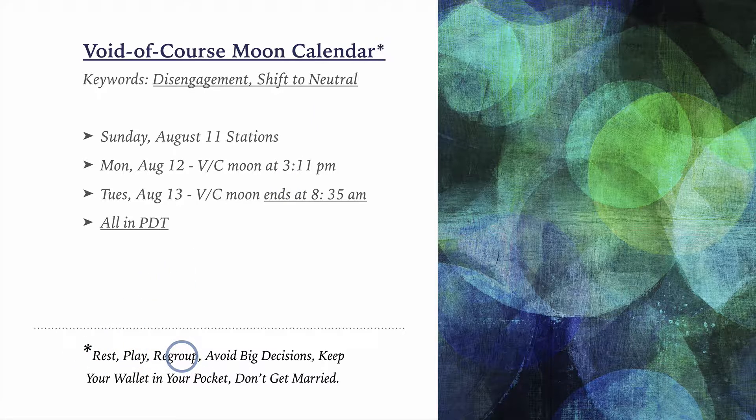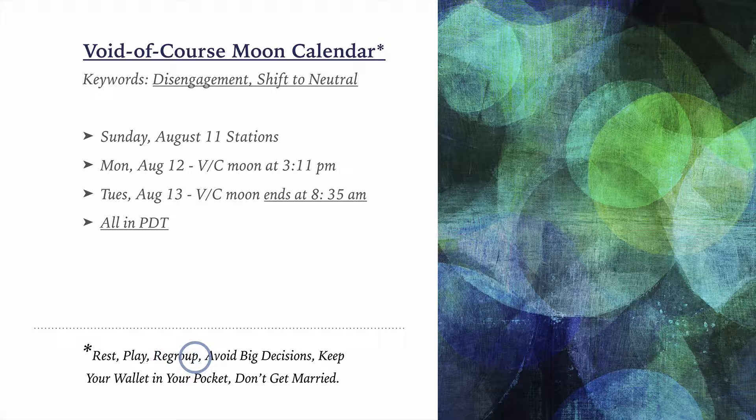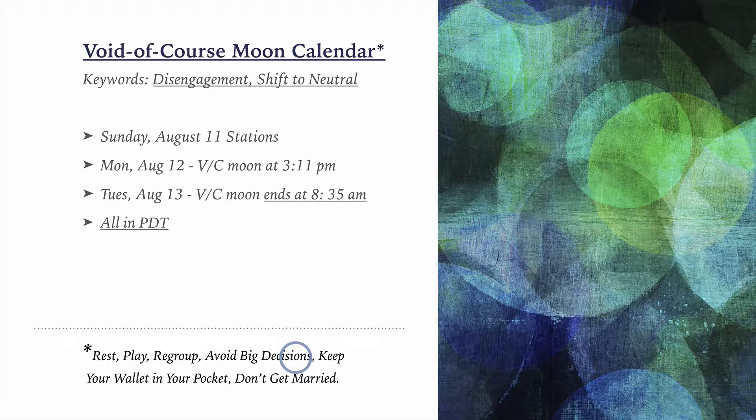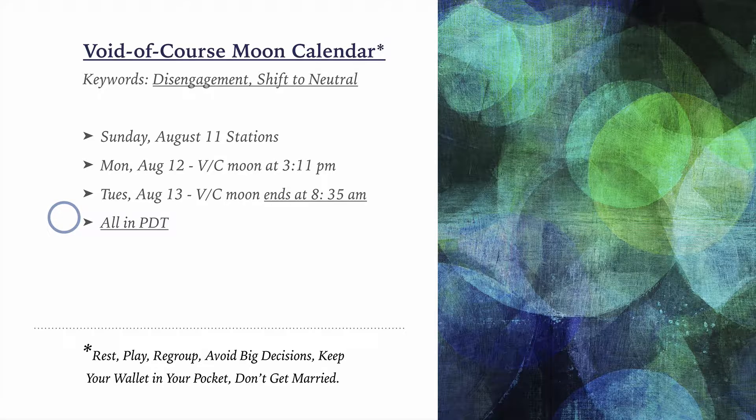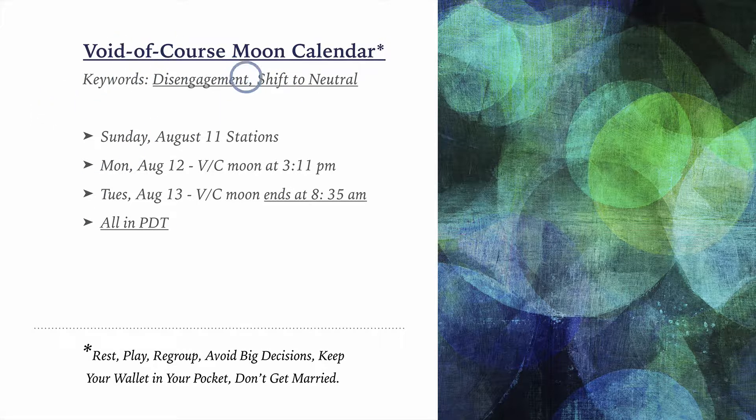Because the Void of Course Moon is really ideal for resting, playing, sort of regrouping, kicking back, going to the beach. It's not a good time to make big decisions to spend a lot of money or to start an important transition in your life, for example, getting married. So I wouldn't buy a house, I wouldn't buy a car, things of that nature during a Void of Course Moon. And whenever I can in my life, I try to reschedule or I try to look ahead and try to reschedule events or business activities that I regard as important to a time period where it's not a Void of Course Moon.